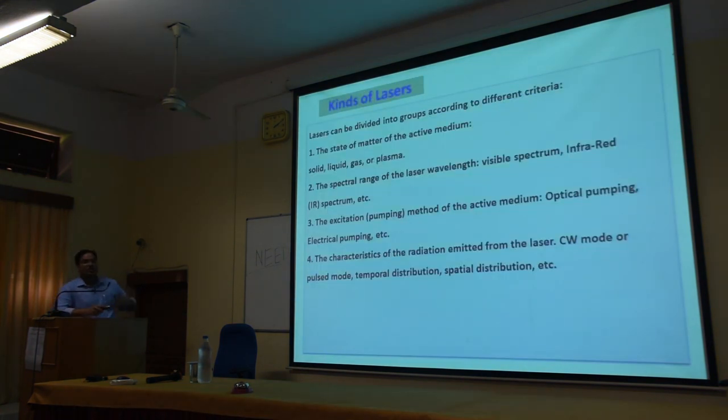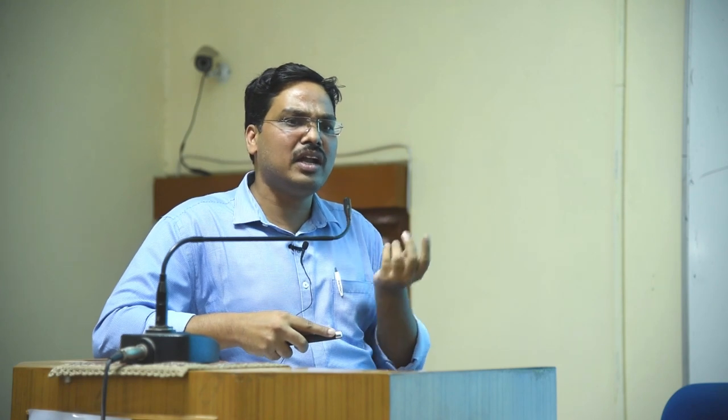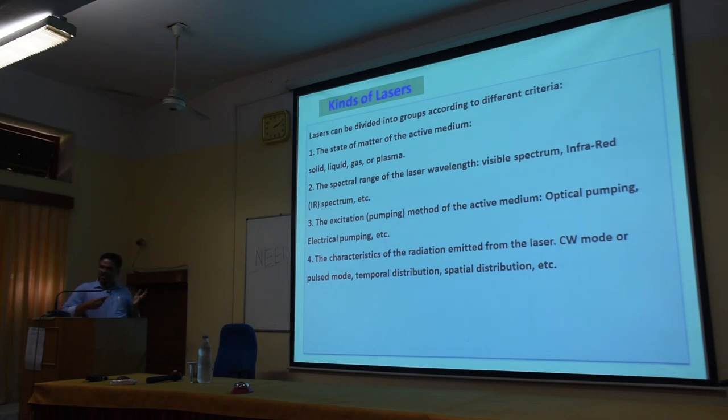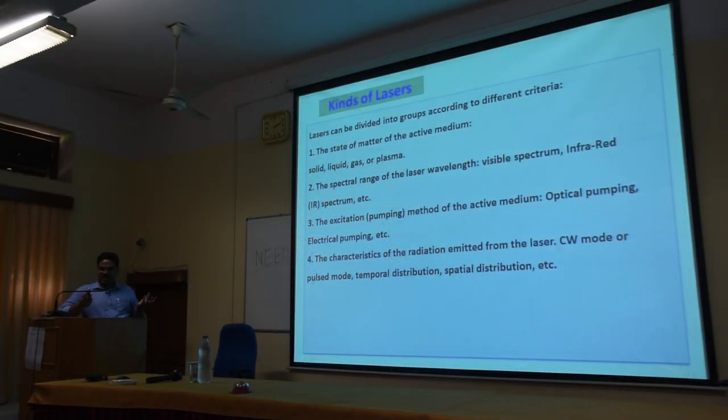The kinds of laser are basically decided by the active medium used. Generally there are three types of medium: solid, gaseous, and liquid, giving solid-state lasers, gas lasers, and liquid lasers. Lasers are also classified by their output wavelength, by whether they are continuous wave or pulsed, and by their pumping method — optical pumping, electrical pumping, chemical pumping, or, for advanced lasers, nuclear pumping.